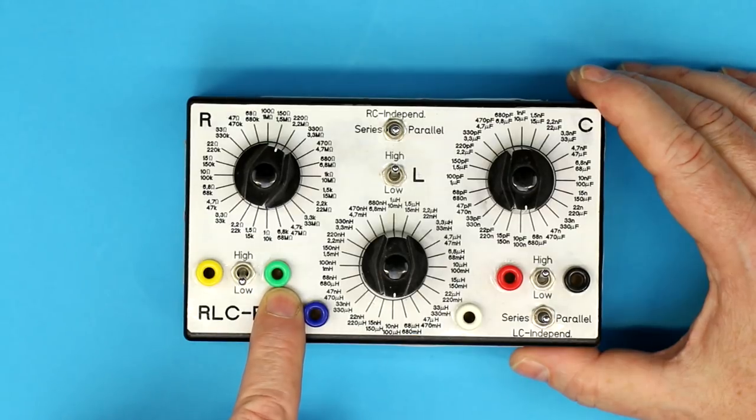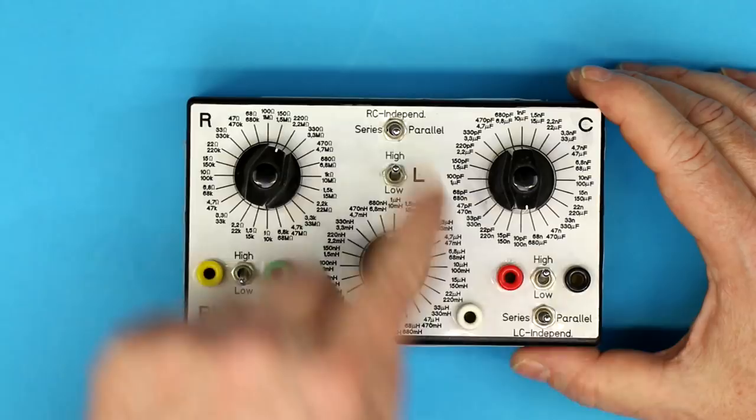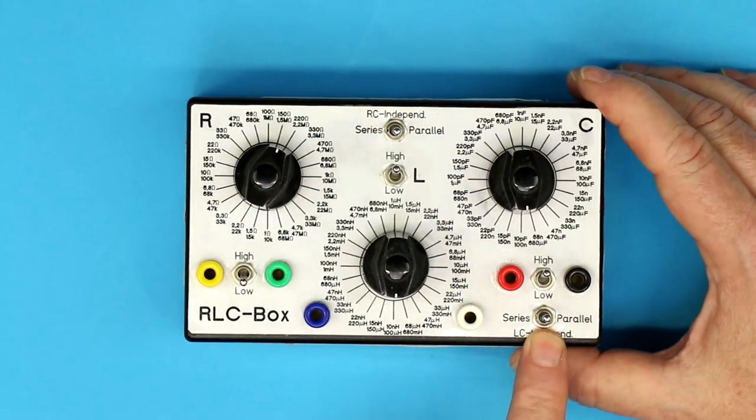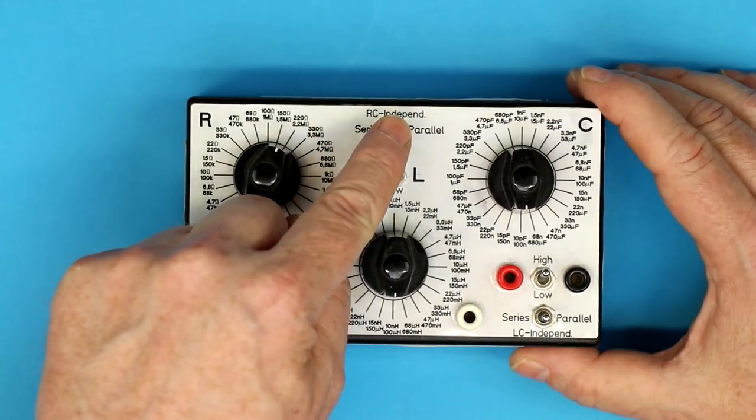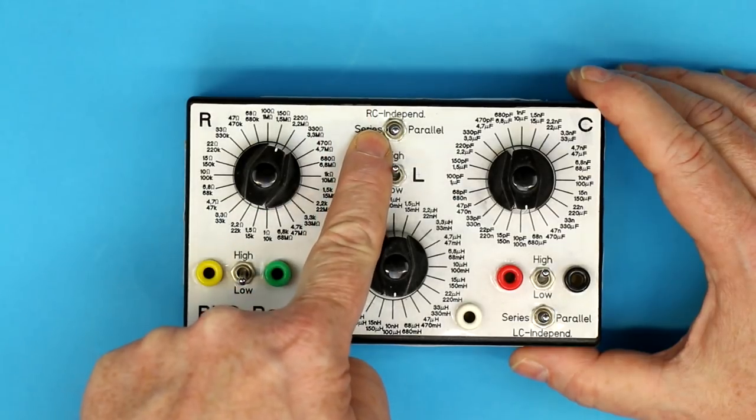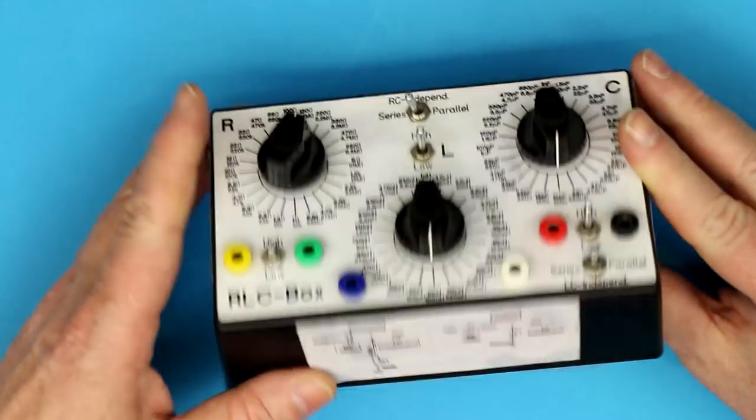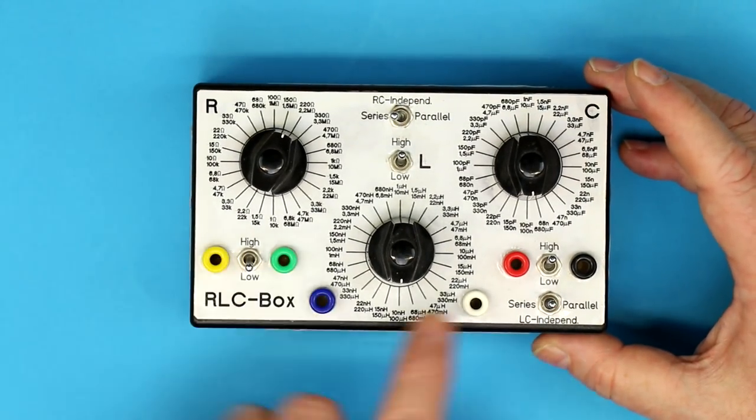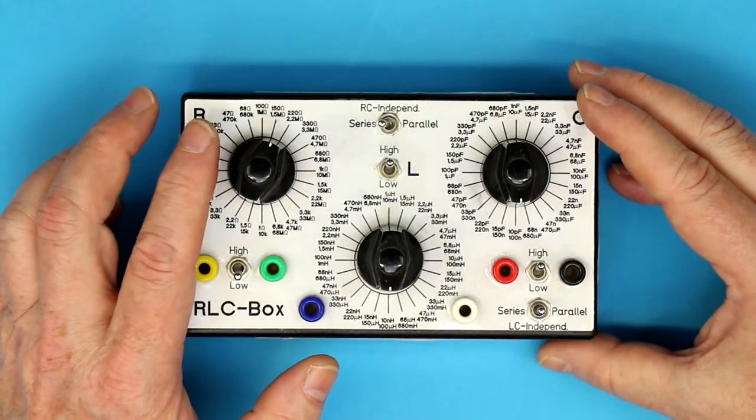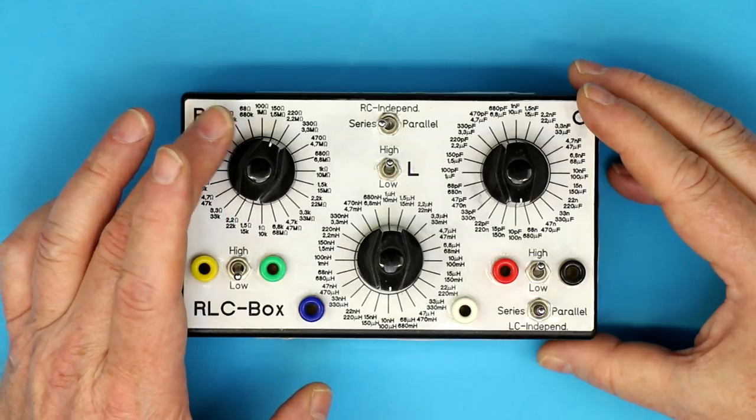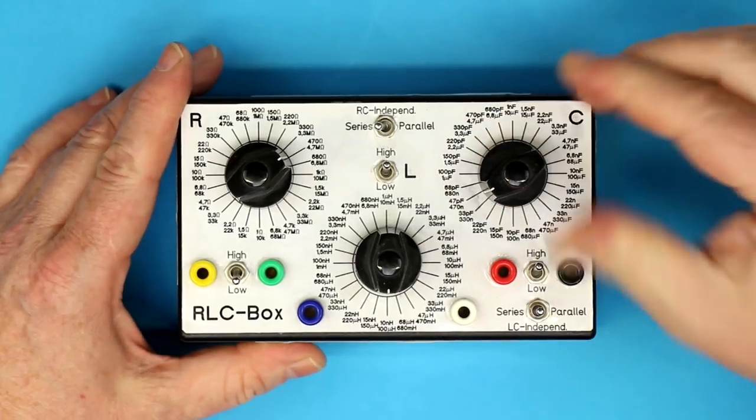What makes this thing more versatile than simply having a variable resistor, inductor and capacitor is that you can connect the three component types with these two switches. As you see now they are still in the position independent which means each component is disconnected from its neighbors. But for example the simplest configuration is if you put the RC switch into series, then what you get is a low pass or a high pass filter depending on how you connect your source and your load to the banana jacks. Not only is this the simplest combination, it's already quite versatile. You quite often have to determine the cutoff frequency of a high pass or low pass filter experimentally and this goes just with the turning of a switch, or in that case two switches to find a suitable combination.